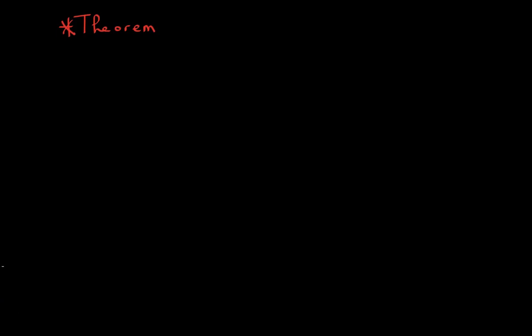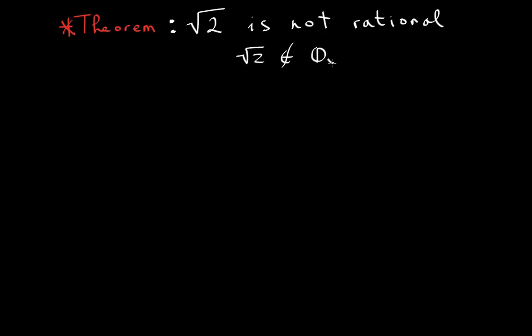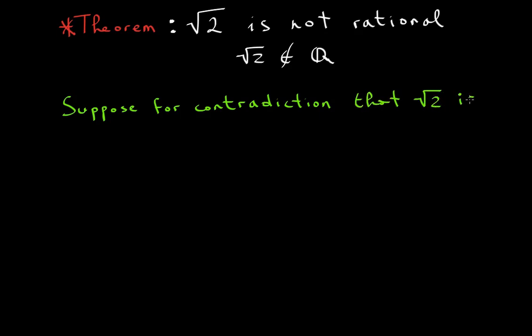Let me make it a theorem — this is a very important theorem, I'm going to put a star beside it. This is a wonderful segue into sequences and later series, and before that into ordered fields. It basically explains why we were not satisfied with the rationals. The theorem is: the square root of 2 is not rational — in mathematical terms, √2 is not an element of the rational number system. So how do we prove this by contradiction? The first line is always: suppose for contradiction that √2 is rational.